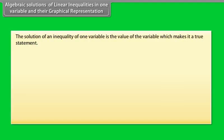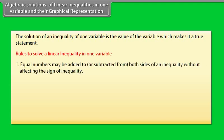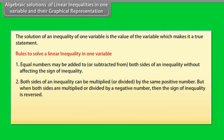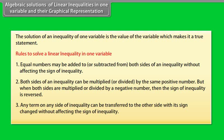Algebraic solution of linear inequalities in one variable and their graphical representation. The solution of an inequality in one variable is the value of the variable which makes it a true statement. Rules to solve a linear inequality in one variable: Rule 1 — Equal numbers may be added to or subtracted from both sides of an inequality without affecting the sign of inequality. Rule 2 — Both sides of an inequality can be multiplied or divided by the same positive number, but when both sides are multiplied or divided by a negative number, the sign of inequality is reversed. Rule 3 — Any term on any side of an inequality can be transferred to the other side with its sign changed without affecting the sign of inequality.